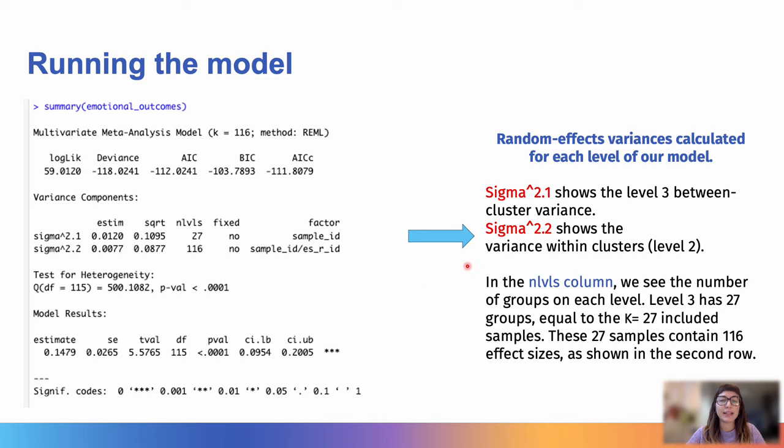We can also see, as I specified here, this part, so the number of groups on each level. Level 3 has 27 groups, which is the 27 included samples, and these 27 samples contain 116 effect sizes.